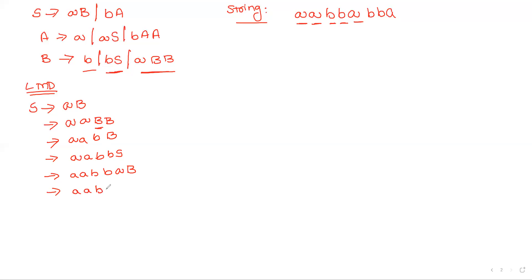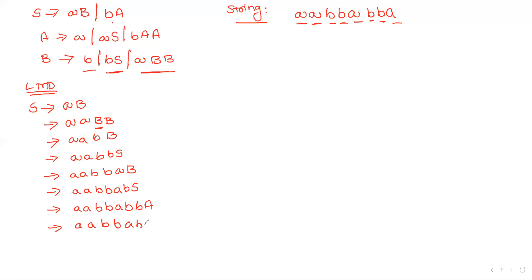Continuing: 'aabba' is built, and we need 'b' next, so capital B is replaced with bS rather than just 'b', because there is still more string remaining. Then S → ba gives us 'aabbabb'. Finally capital A is replaced with small 'a', completing the string. This is the leftmost derivation — whenever more than one variable appears, we always replace the leftmost variable first before moving right.